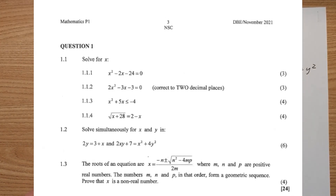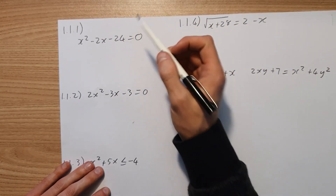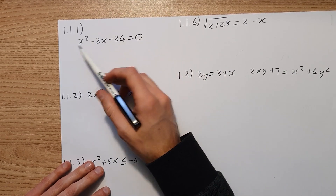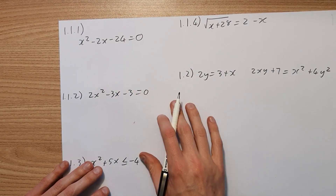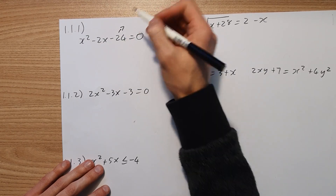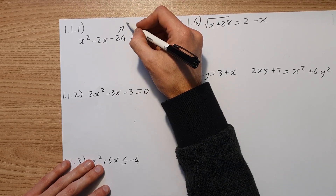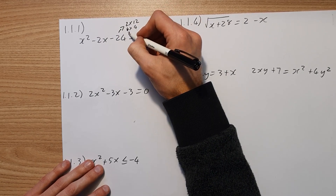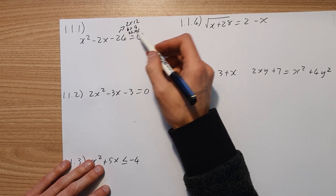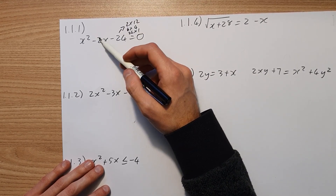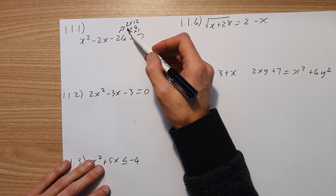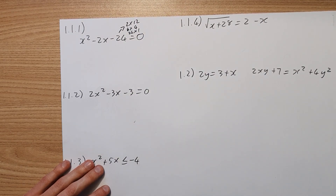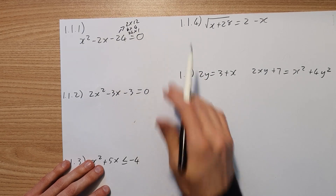Question 1.1 says: given x squared minus 2x minus 4 equals zero, and we need to solve for x. Pretty straightforward. We have a polynomial and we just need to factorize it. We find our factors of 24, which is 2 times 12, 6 times 4, 24 times 1. We need to find a set of factors which will give me minus 2. We can see that if we take negative 6 and plus 4, we get minus 2.